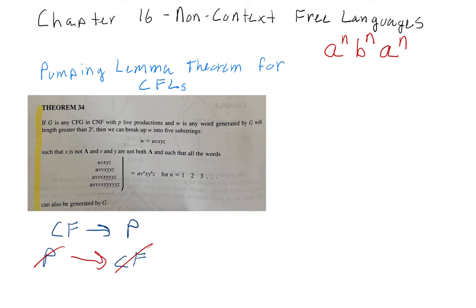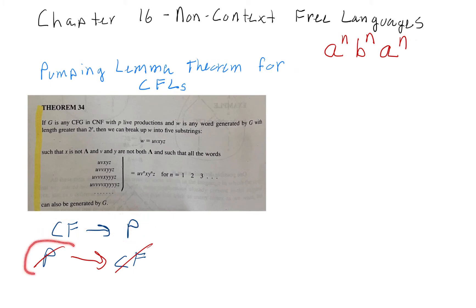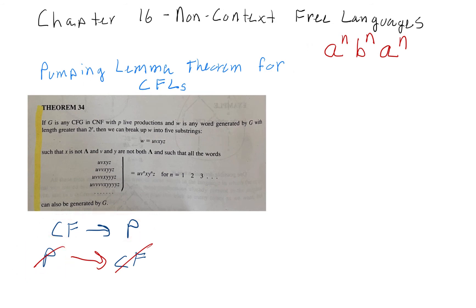Much like the pumping lemma theorem for regular languages, this has an implication: if a language is context-free, then we can pump it. So we're going to prove that we can't pump it, and therefore it must not be context-free. Hopefully you remember your propositional logic — if context-free implies pumpable, and it's not pumpable, then it cannot be context-free.